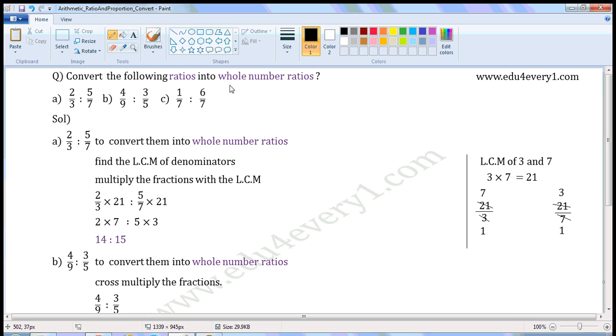Convert the following ratios into whole number ratios. First one: 2/3 is to 5/7. This is the antecedent, this is the consequent.